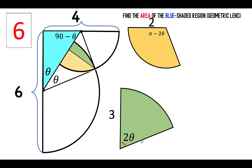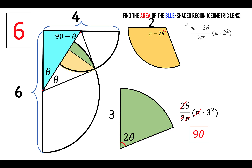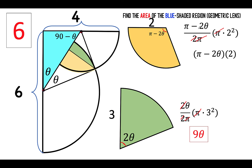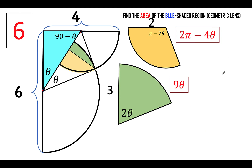The area of this green sector is the central angle over one rotation (2 pi), times the area of the green circle (pi r squared), where r is 3 units. The pi's cancel and the 2's cancel, leaving 3 squared, or 9, times theta. For the yellow sector, similarly, the central angle (pi minus 2 theta) over 2 pi times pi times r squared, where r is 2 units. The pi's cancel and simplifying gives 2 pi minus 4 theta. These are the expressions for the areas of the two sectors.